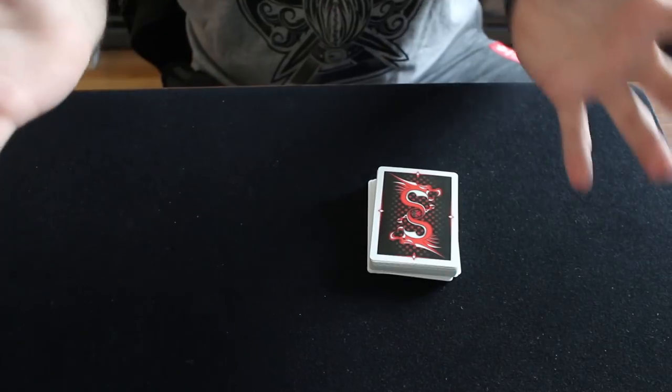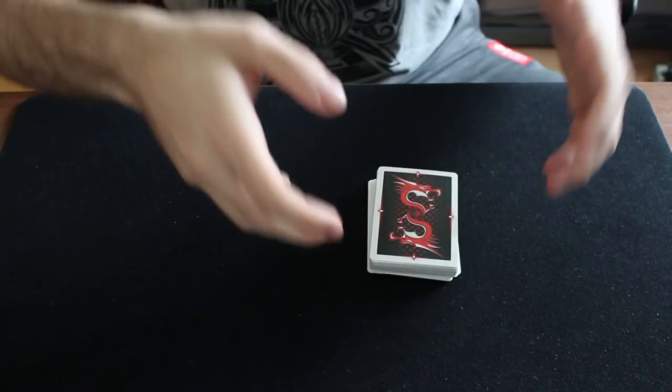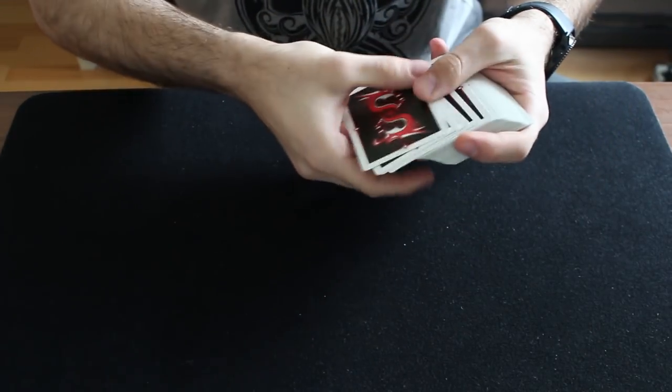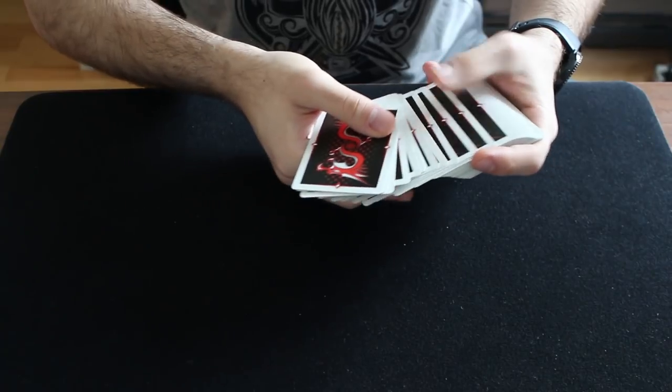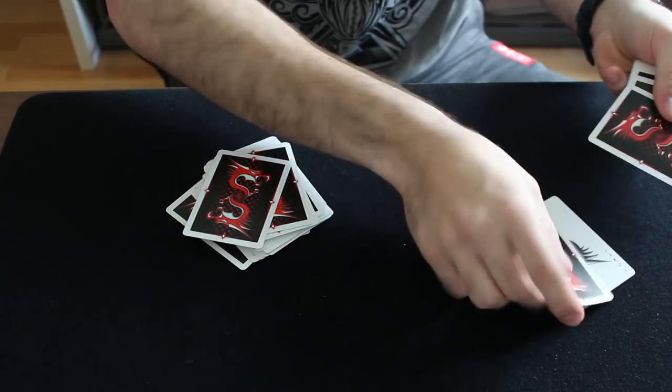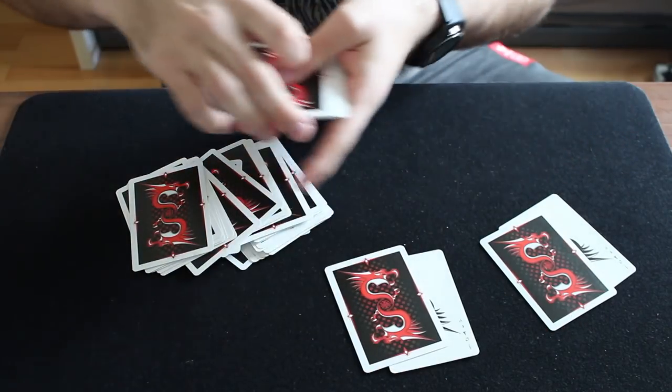Now imagine this, we started with the jokers from the beginning on the table. The spectators could really have named any numbers. We could have landed in different spots in the pack and marked different spots. Yet one of the jokers is left with exactly this card on top, and the other joker is left with this card on top.